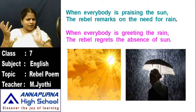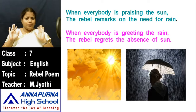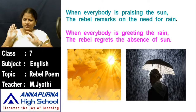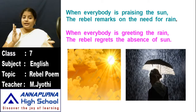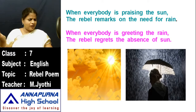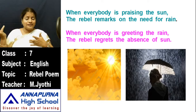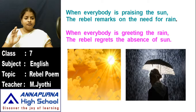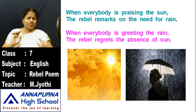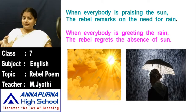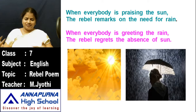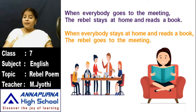When everybody is praising the sun — if everyone enjoys the sunny day — the rebel remarks on the need for rain, saying I want rain, I don't like this sunny day. When everybody is greeting the rain — if everyone is happy enjoying the rain — the rebel regrets the absence of sun, saying I want sun, the sun is not there and I am not feeling happy.